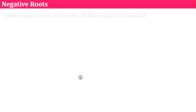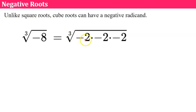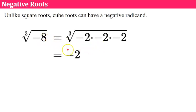Let's talk about negative roots. Unlike square roots, cube roots can have a negative radicand. So the cube root of negative eight could be represented as negative two times negative two times negative two. Negative two times negative two is positive four, multiplied by a third negative two is negative eight. So when we have an odd index, we can have a negative value — the cube root of negative eight is negative two.